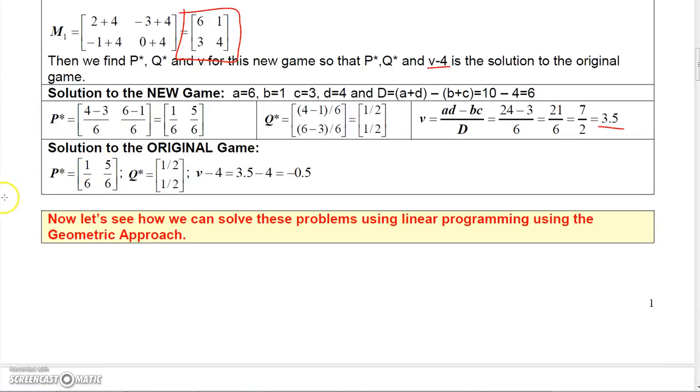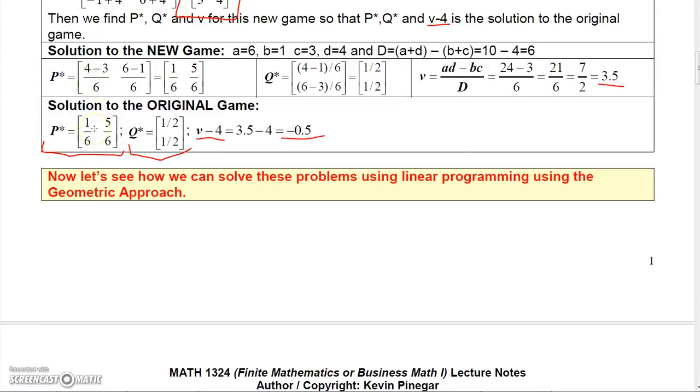Now, for the original game, we still would use the same strategies P star and Q star, but the V value, we'd have to take 4 away to get back to the value of our original game, which would be negative 0.5. Now, let's try this using linear programming.